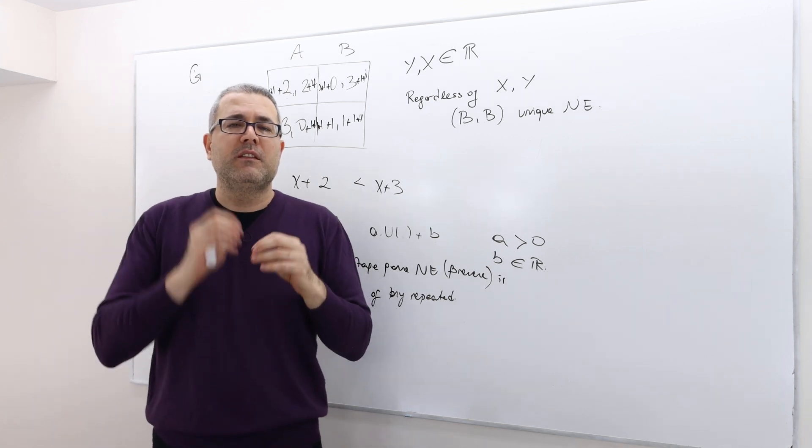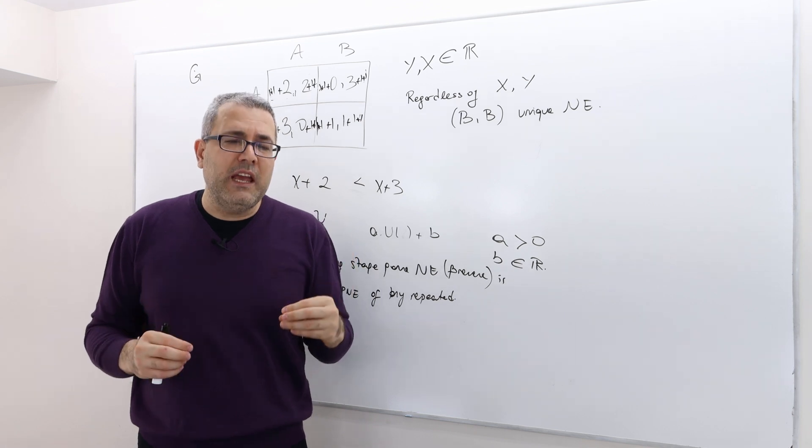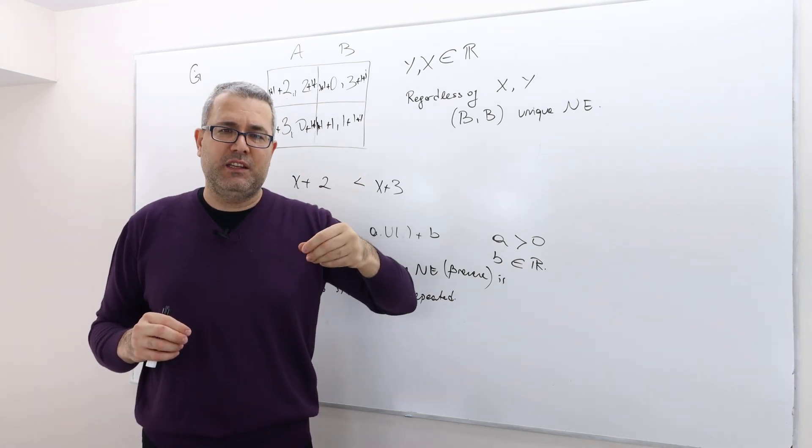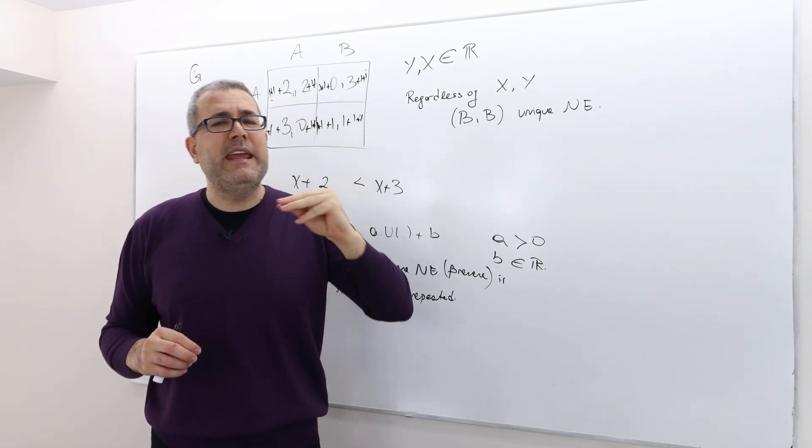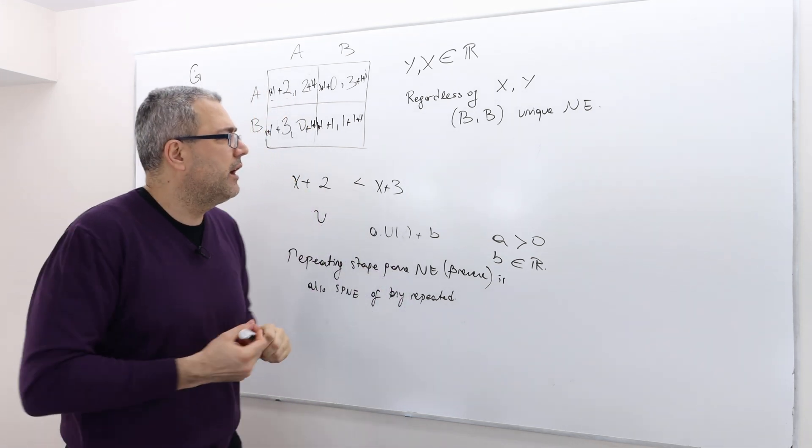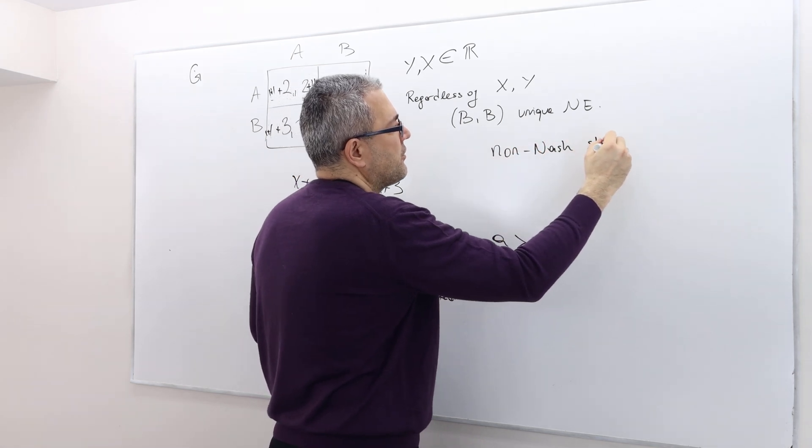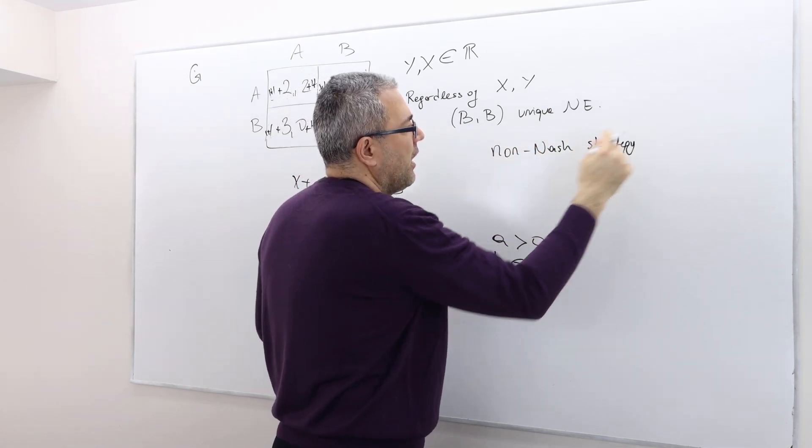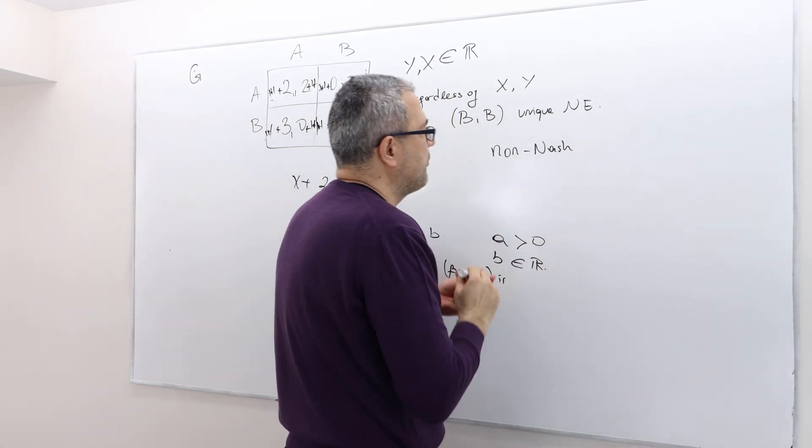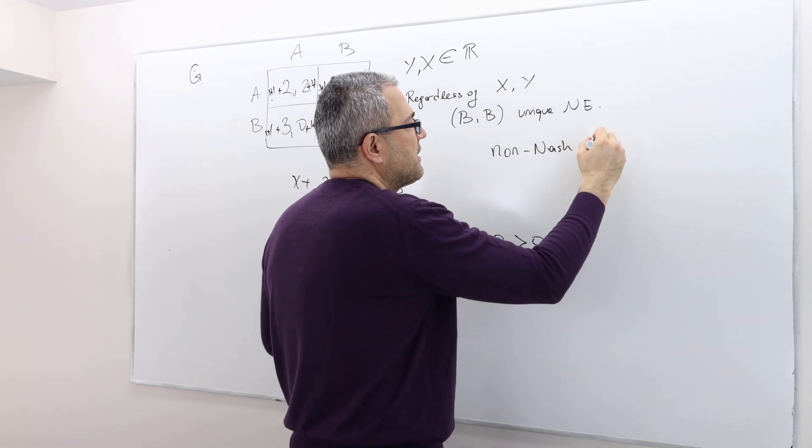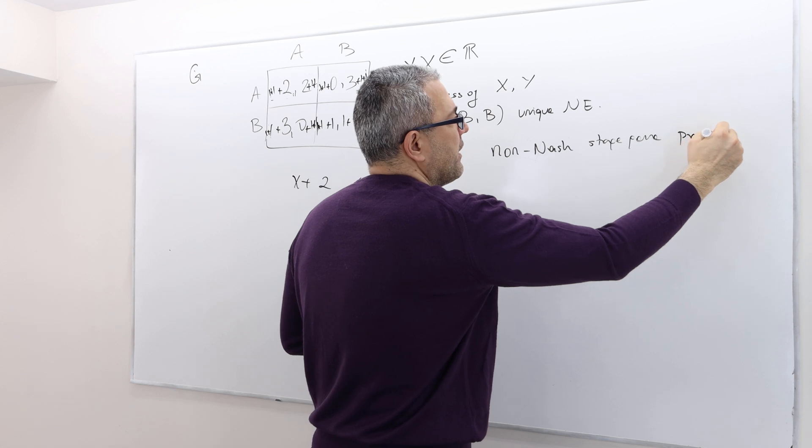If the repeated game is a finite horizon, then playing strategies different than Nash equilibrium may or may not be sustained. We're talking about non-Nash stage game strategy, or more importantly, non-Nash stage game payoff. Let's talk about payoff, forget about strategy.